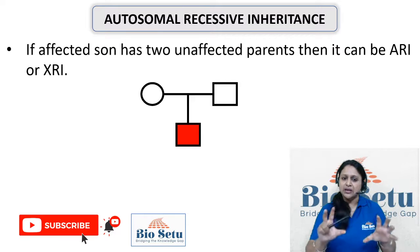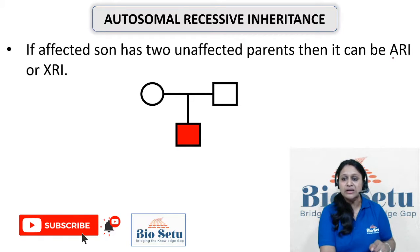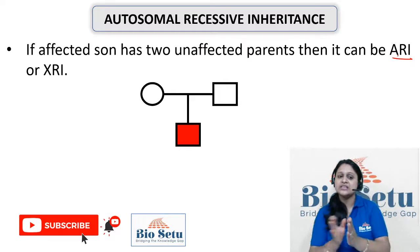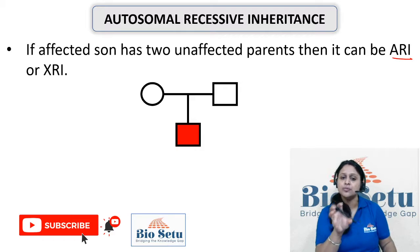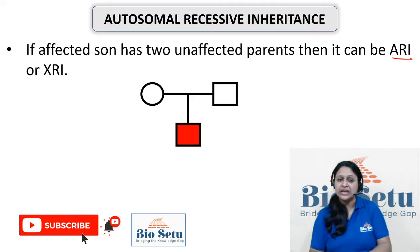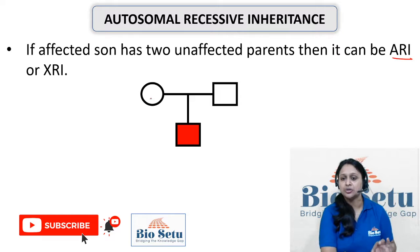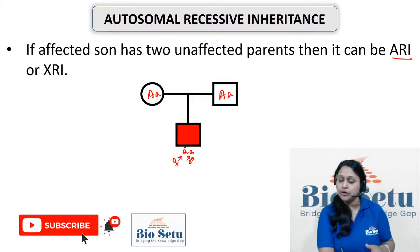However, if the parents are unaffected but the son is affected, this can be either Autosomal Recessive or X-linked Recessive. For the autosomal case, both parents are carriers and both pass their recessive allele to the son, making him affected. This is straightforward.